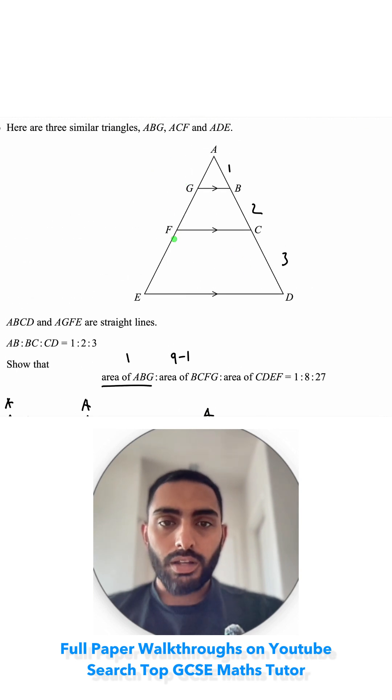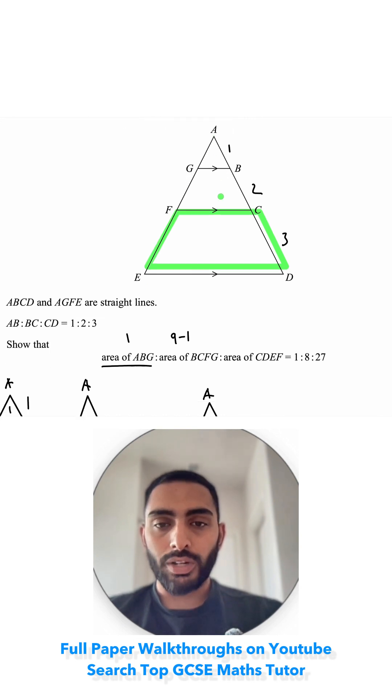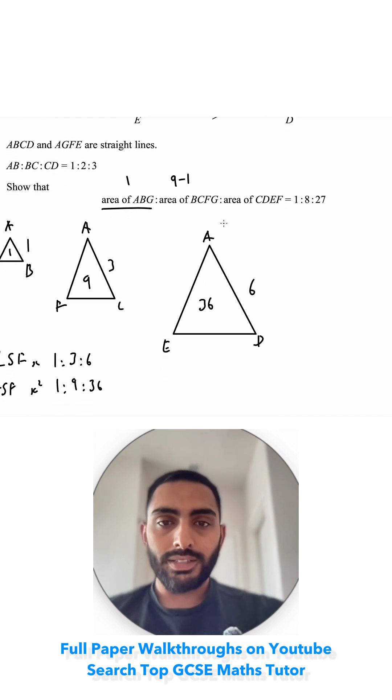For CDEF, I'm finding the area of this trapezium. So I need to find the area of the large triangle, and I need to take away the area of the middle-sized triangle. So the large triangle is 36, and the medium-sized triangle is 9, so 36 minus 9.